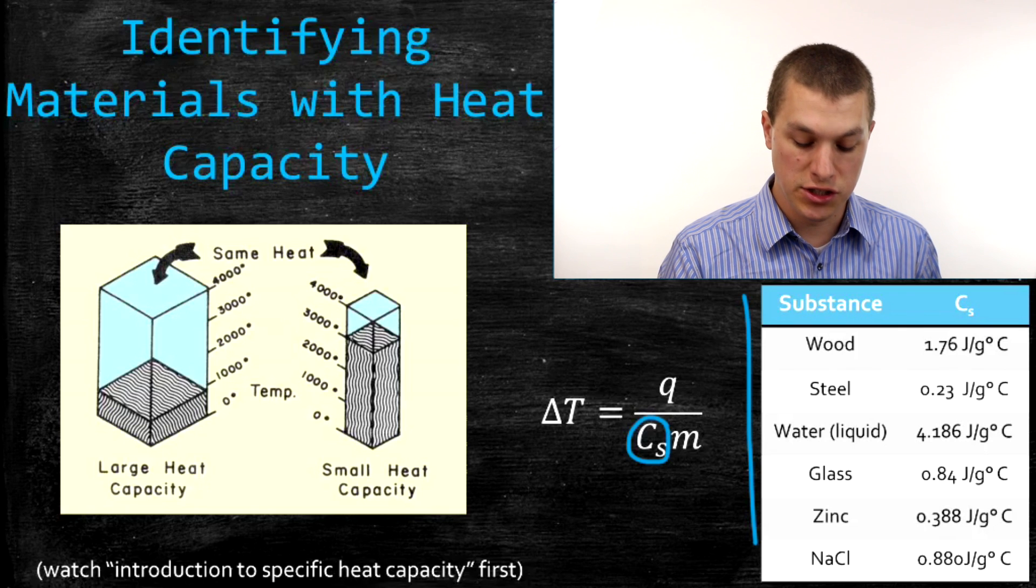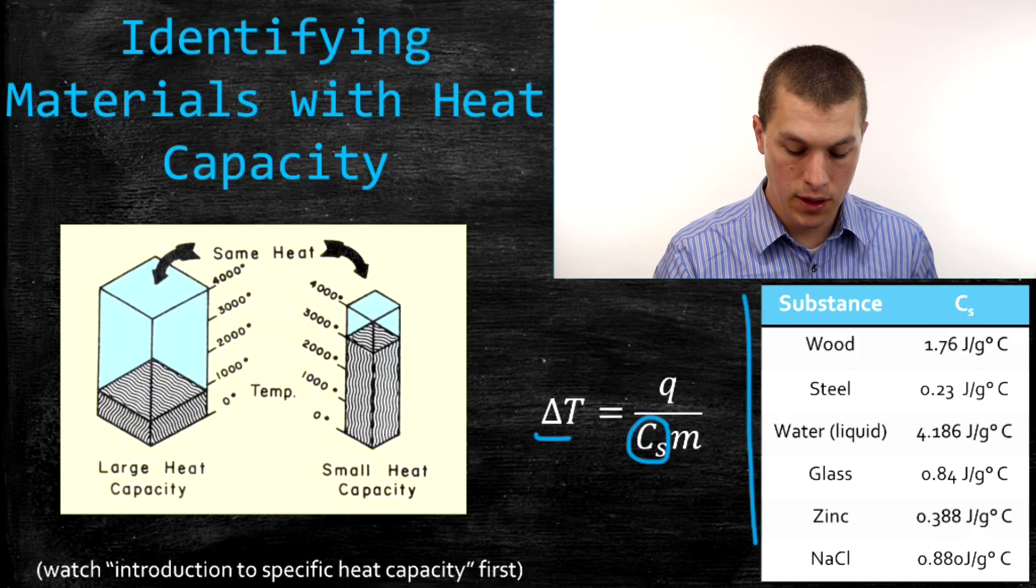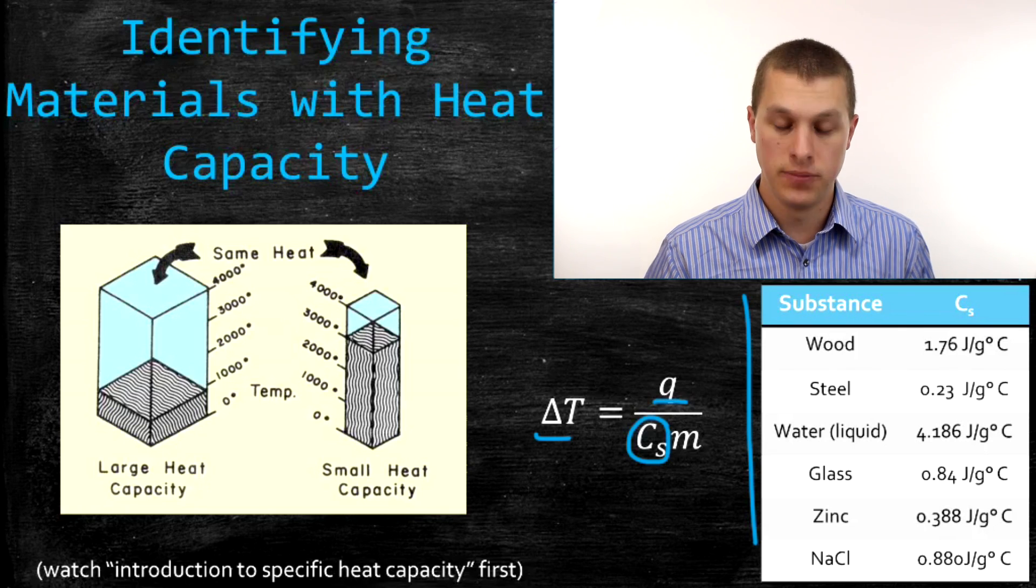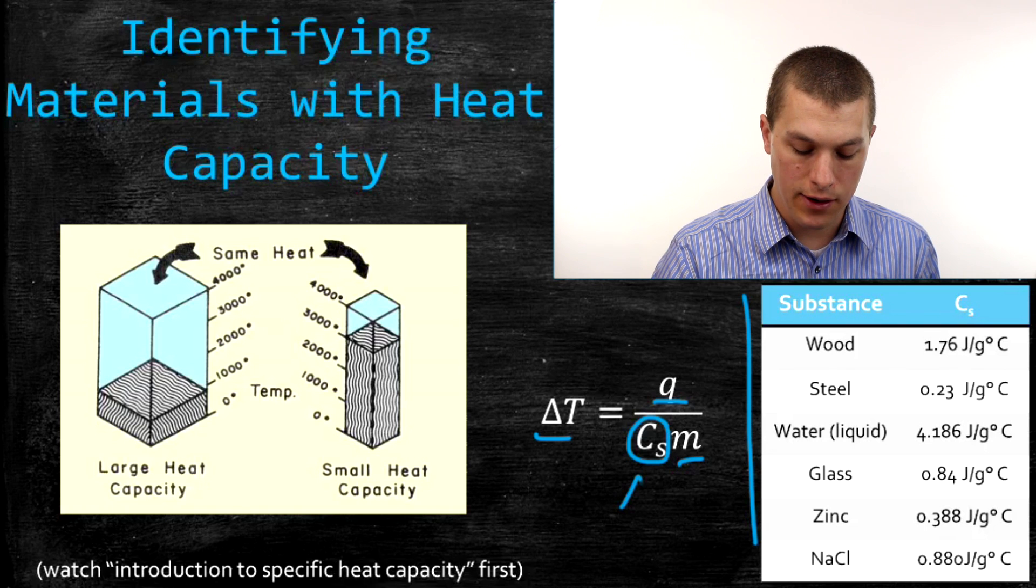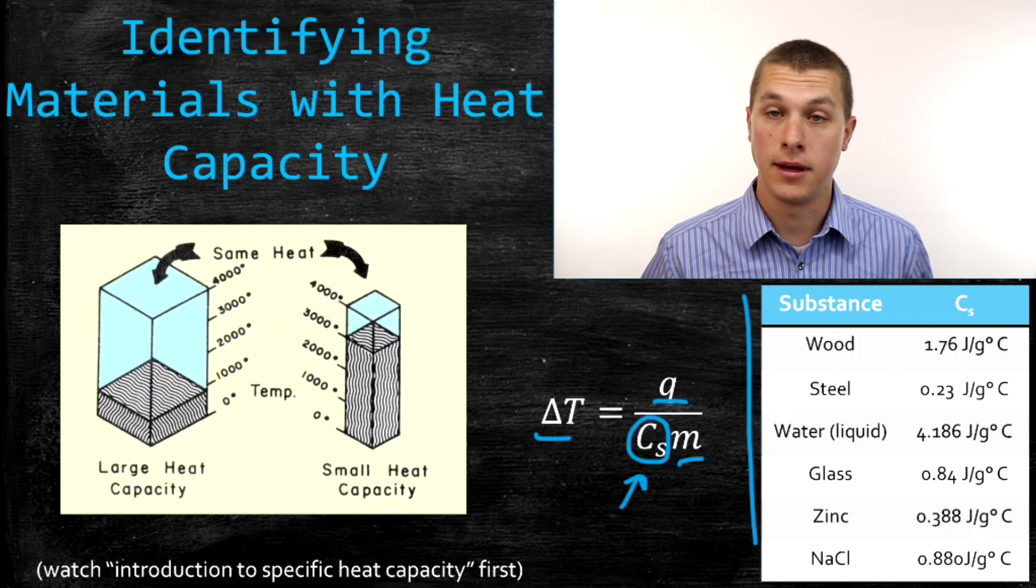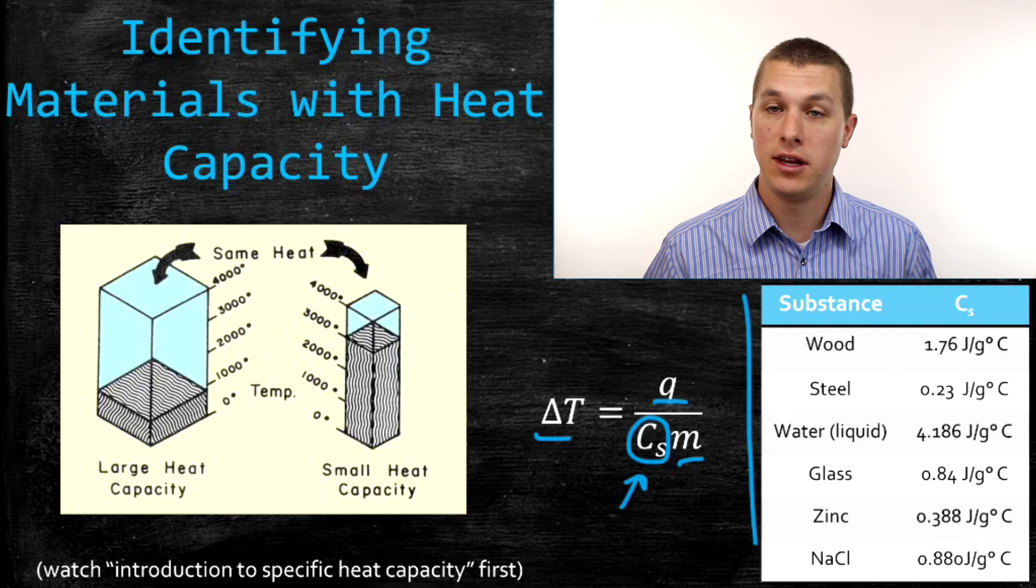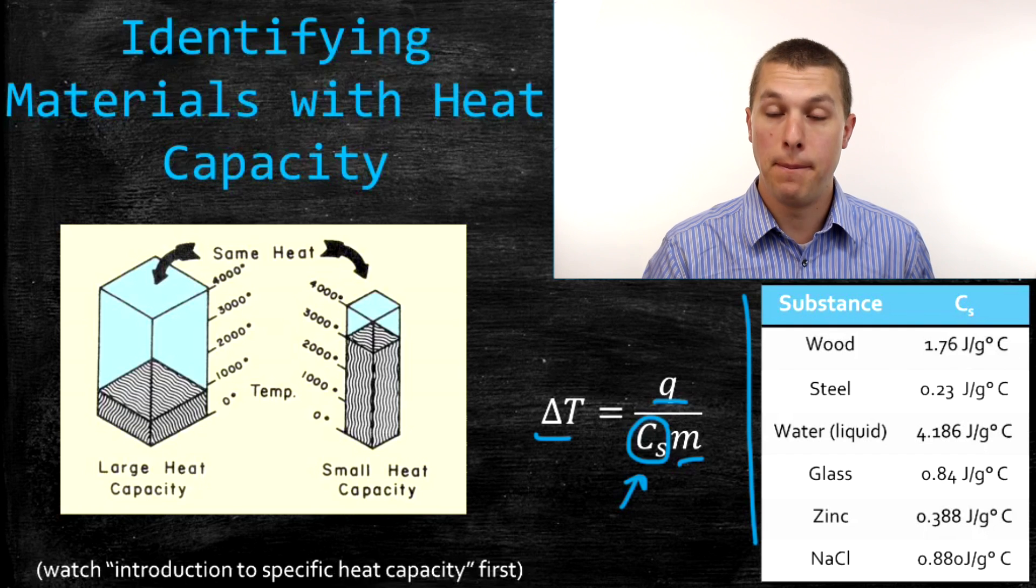If we have the change in temperature of our material, the heat we added to the material, and the mass of our material, we can calculate our heat capacity. And then we can use that calculated heat capacity to go to our table and match it up.